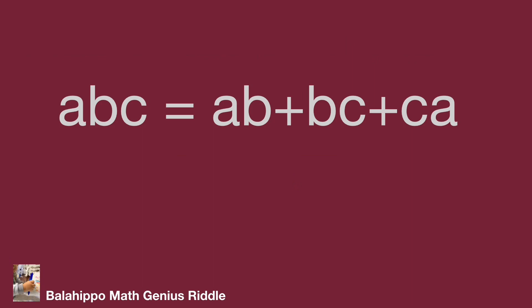The given information: a·b·c equals a·b plus b·c plus c·a, and a, b, c are positive integers with a, b, c not equal to zero. This information is limited, so it's hard to get the result. How can we generate more information from them?